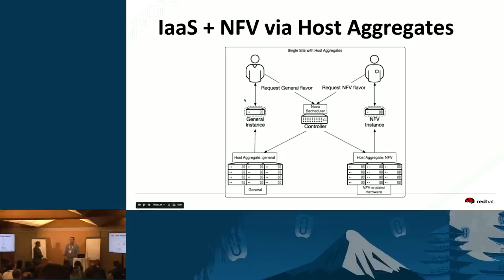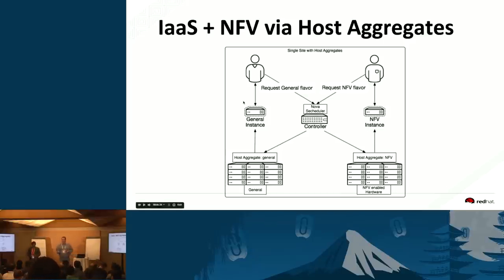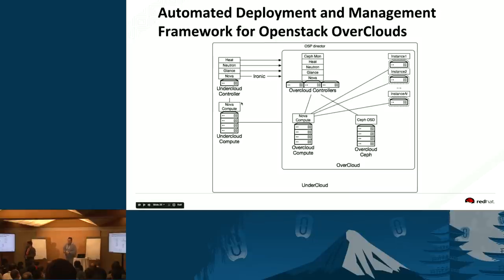Using host aggregates or availability zones, we can expose specific compute nodes to users. A general user requesting via Horizon or APIs directly gets the host aggregate exposing the general pool of compute nodes. On the other hand, a user needing NFV or near bare-metal performance would be exposed to a separate host aggregate that provides that capability.